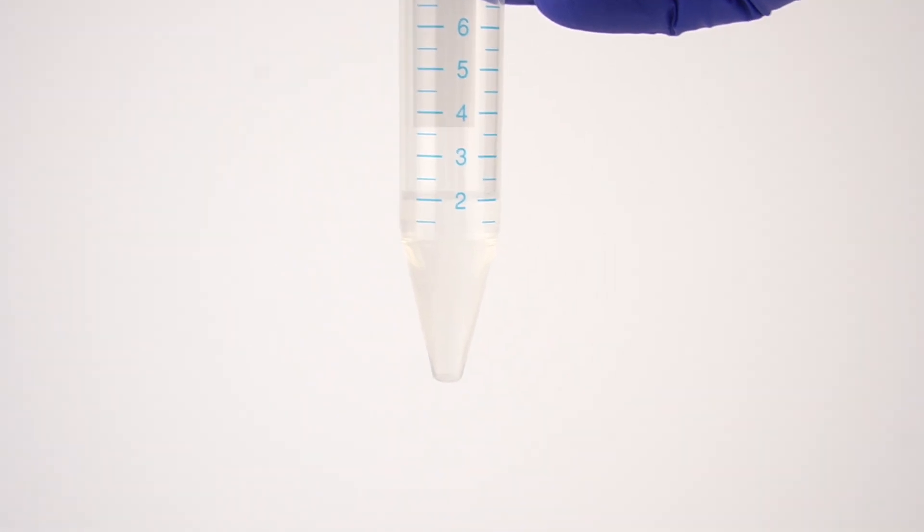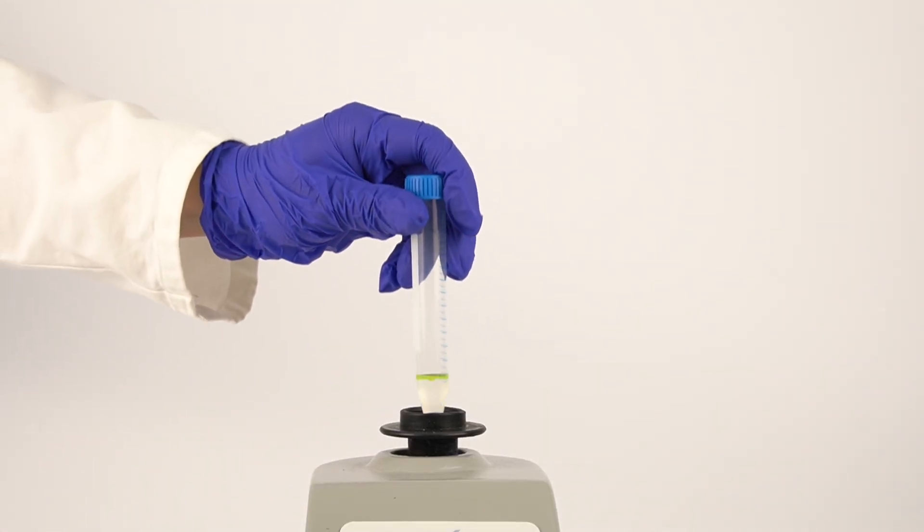First, we cast drop the inner water phase into a centrifugation vial containing the oil phase and produce a single emulsion by vortexing.